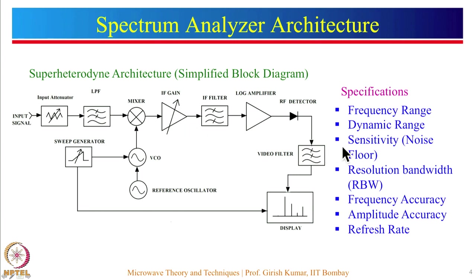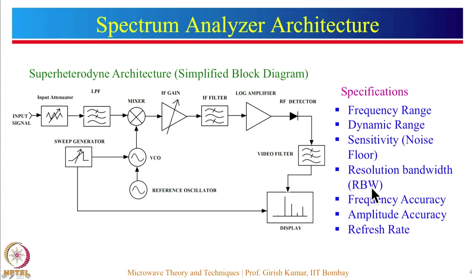These are some important specifications of a spectrum analyzer. Frequency range is the range through which the spectrum analyzer can work. Dynamic range is defined as the difference between the highest signal and the minimum signal that can be detected and displayed. Sensitivity is the minimum detectable signal, governed by the noise floor. Resolution bandwidth, abbreviated as RBW, tells the ability to differentiate between two closely spaced frequency components. There are also frequency accuracy and amplitude accuracy specifications.